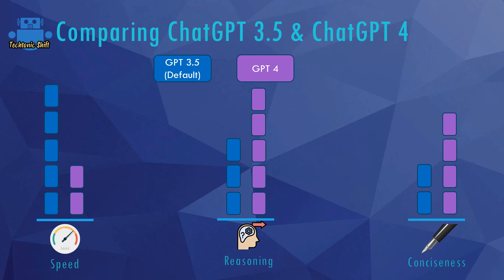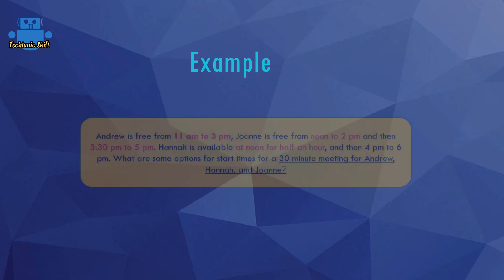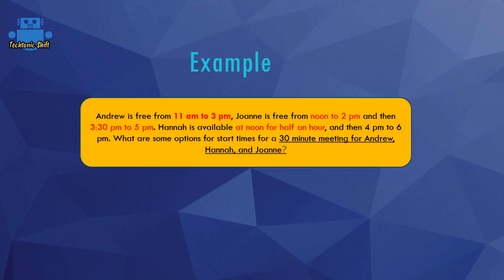This example is actually an official example by the OpenAI team, and I think it's a great one to show the differences between these two models. This example is all about finding a 30-minute meeting slot for 3 different people. Everybody has different availabilities, and we ask ChatGPT what would be the slot where all people are available. The only working solution is 12pm to 12:30pm — noon to 12:30pm.